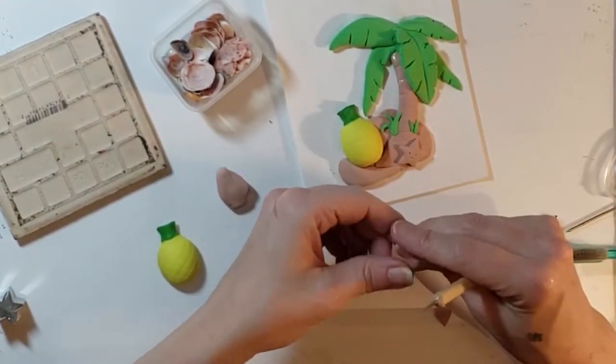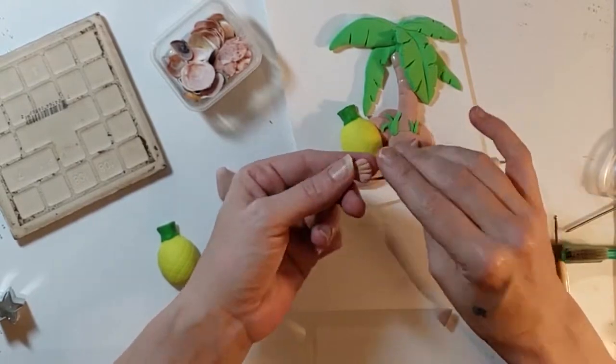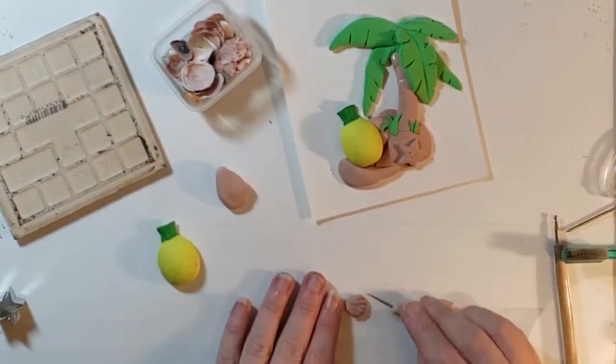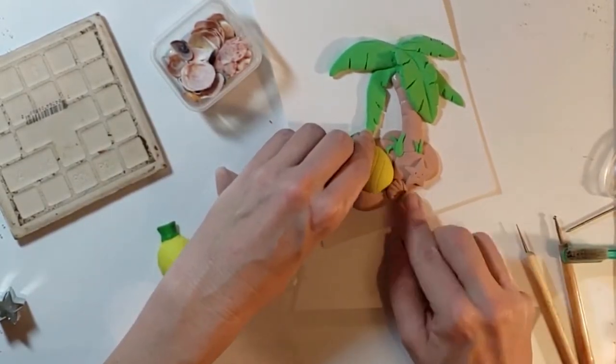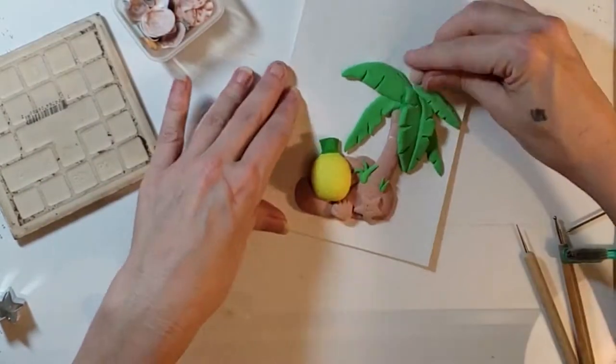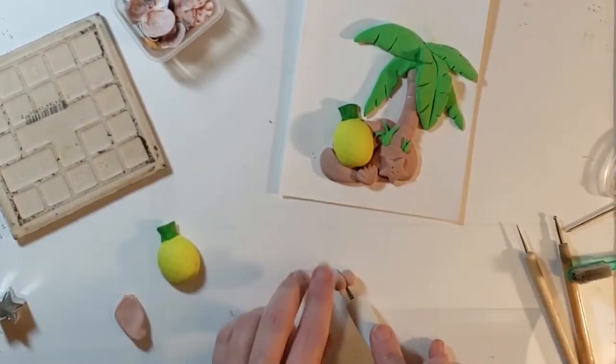And then I shaped out a seashell. I had thought to add real shells but with the cartoony look I was already getting out of this, I didn't think it looked right.